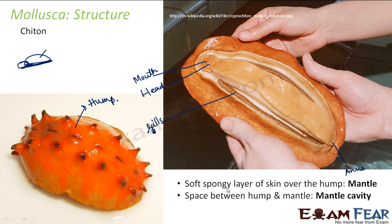There is a soft spongy layer of skin over the hump, known as the mantle. The space between the hump and the mantle is called the mantle cavity. On the outer region you have the girdle, which is used for defence. This is the calcareous shell which ensures protection to the internal organs of the mollusc. The mollusc being displayed in this picture is a Chiton.